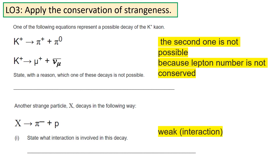The interaction must take place through the weak interaction because strangeness is not being conserved in this interaction.